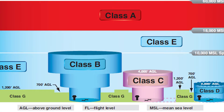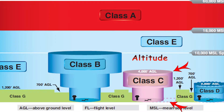The altitude of Class C airspace is from the surface to the top of the Class C airspace or the bottom of Class B airspace.